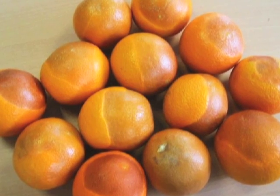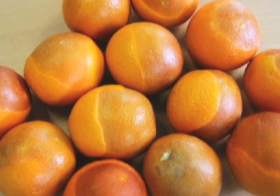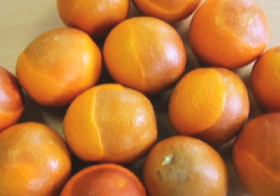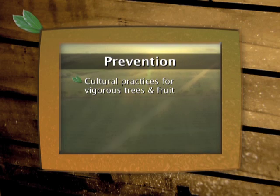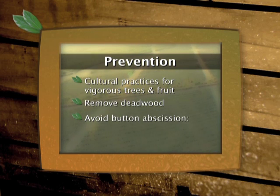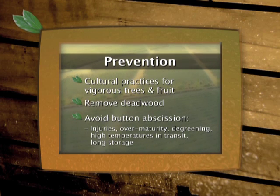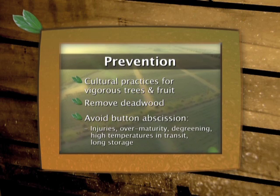Phomopsis has a life cycle and mode of infection similar to Diplodia, in that it remains latent in the button tissue and infects the fruit when the calyx abscises. Further infection develops after the harvest when loosening of the calyx results in natural openings, through which the fungus then penetrates. Phomopsis stem end rot may be prevented by cultural practices that promote vigorous trees and fruit with high vitality, by avoiding an accumulation of dry twigs in the tree and avoiding conditions that will lead to abscission of the button, such as injuries, overmaturity, degreening of fruit with ethylene, high temperature during transit of packed fruit and long storage.